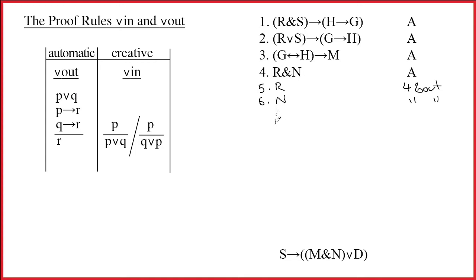Okay, well that means I'm supposed to make a box for arrow in. I'll try to make it kind of nice and neat, although it's never easy. I'm writing freehand on this screen. Eh, not too bad. Okay, S at the top of the box, M ampersand N, wedge D at the bottom of the box. That's line 7, and this is a provisional assumption for arrow in.